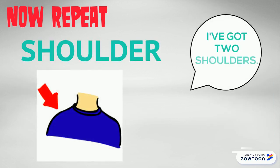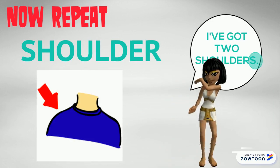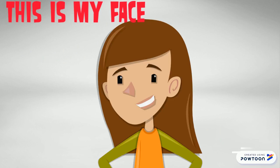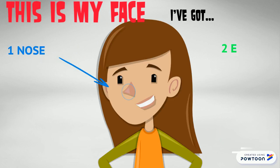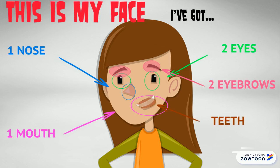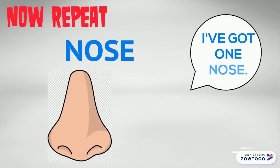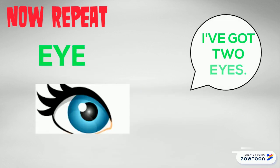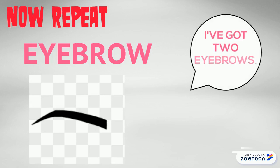Toes. Shoulder — I've got two shoulders. This is my face. I've got one nose, two eyes, one mouth, two eyebrows, teeth. Now repeat: nose — I've got one nose. Eye — I've got two eyes. Eyebrow — I've got two eyebrows.